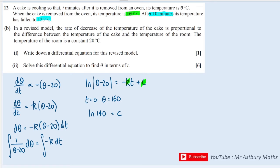And I'm going to be able to get the next constant by using the next bit of information I have, which is that after 10 minutes—so when t = 10—I get that the temperature is equal to 125. So subbing in, that's going to give me ln(125 - 20) = 105, and that's going to equal -k × 10, which is -10k + c, which we know is ln(140).